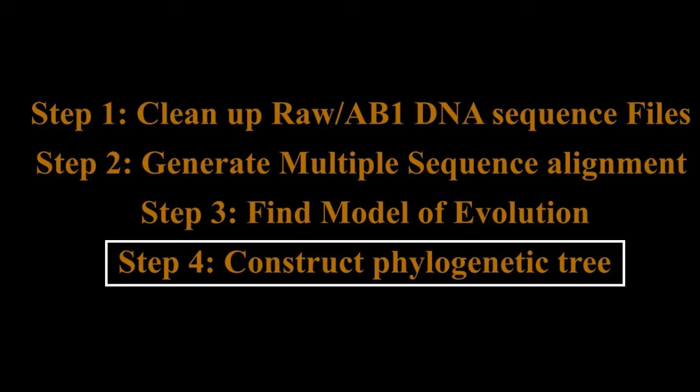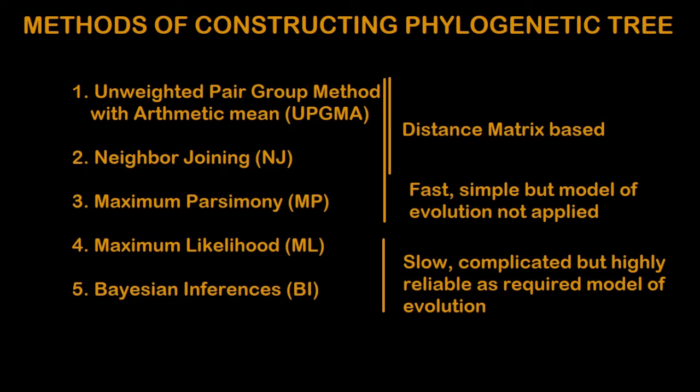There are basically five methods for the construction of a phylogenetic tree. Two are distance-metrics based: Neighbor Joining (NJ) and UPGMA (Unweighted Pair Group Method with Arithmetic Mean). The third is Maximum Parsimony. These three methods are simple but not model-of-evolution based, so they are not considered reliable. The next two methods are Maximum Likelihood and Bayesian Inference, which are model-of-evolution based, more complicated and slow, but highly reliable.